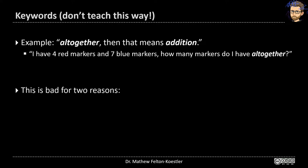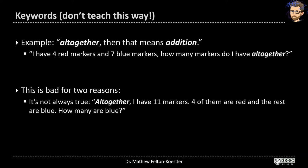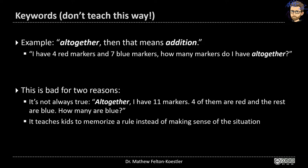This is really bad for two reasons, so I don't want you to teach this way. The first is that it's not always true. I can have a problem like: all together I have 11 markers, four of them are red, and the rest are blue — how many are blue? If I were to circle 'all together' and add 11 and four, I would get the wrong answer. More importantly, even if it did work, you shouldn't do it because it teaches kids to memorize a rule instead of making sense of the situation.